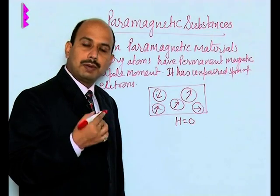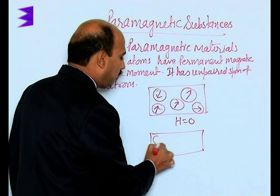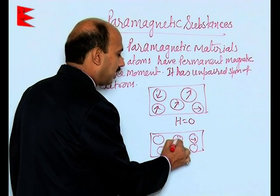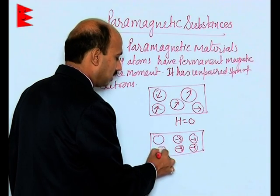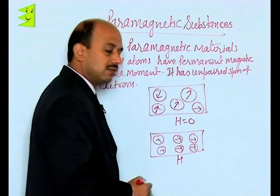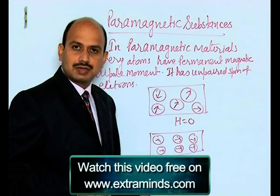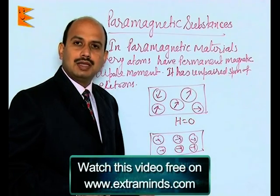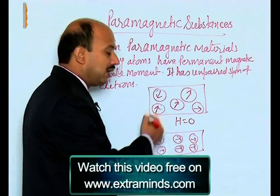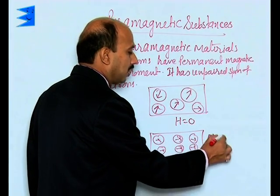As you apply an external magnetic field, all the dipole moments start arranging in one direction, and because of that magnetization starts taking place in the direction of the applied magnetic field. Unlike diamagnetic material, here the magnetic field inside is B greater than H.